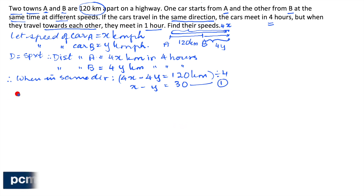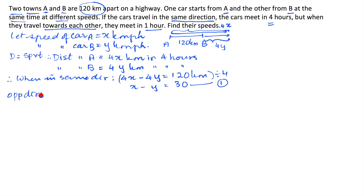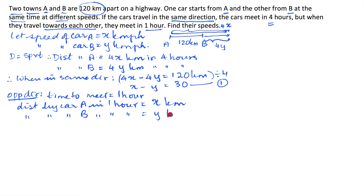Now for the opposite direction case. They meet in 1 hour. The distance covered by car A in 1 hour is x kilometers, since its speed is x kmph, and the distance covered by car B in that same time is y kilometers.